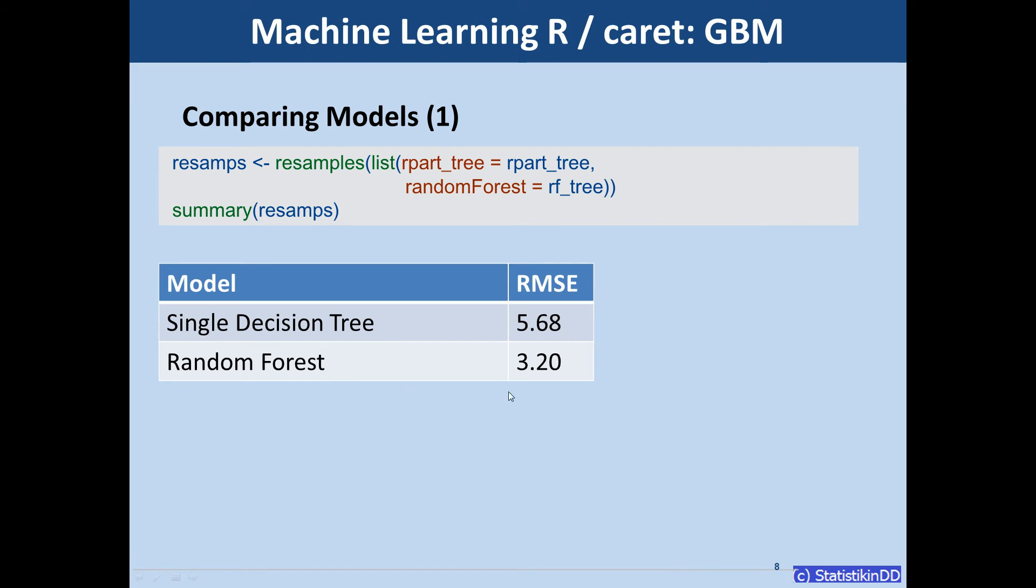So the average prediction error of the single decision tree is $5,680 per home. And the random forest has a lower root mean squared error of only $3,200. So of course the random forest gives more accurate predictions.